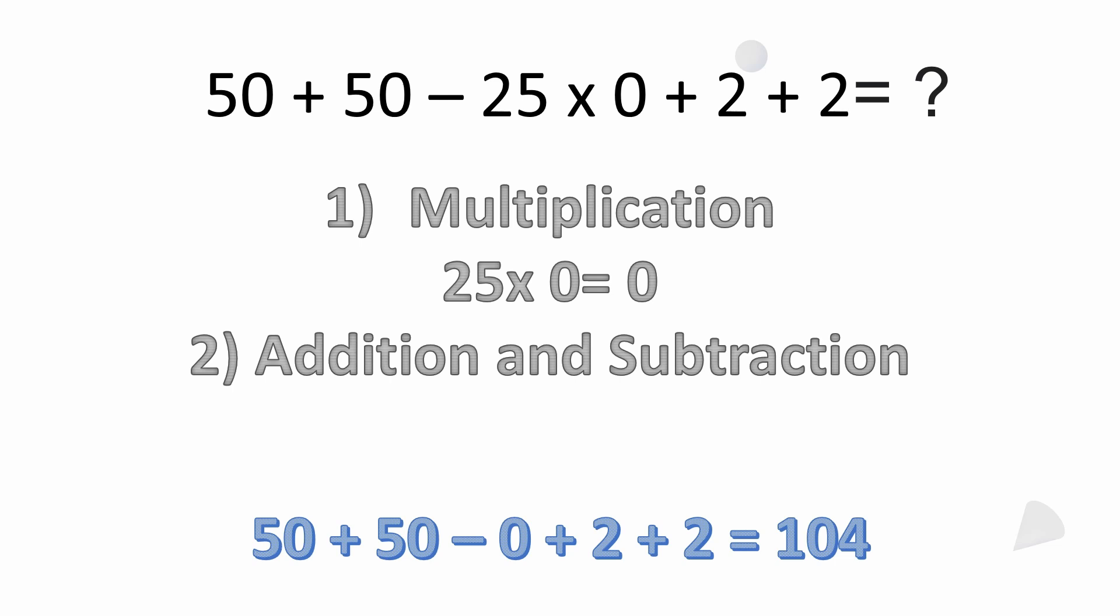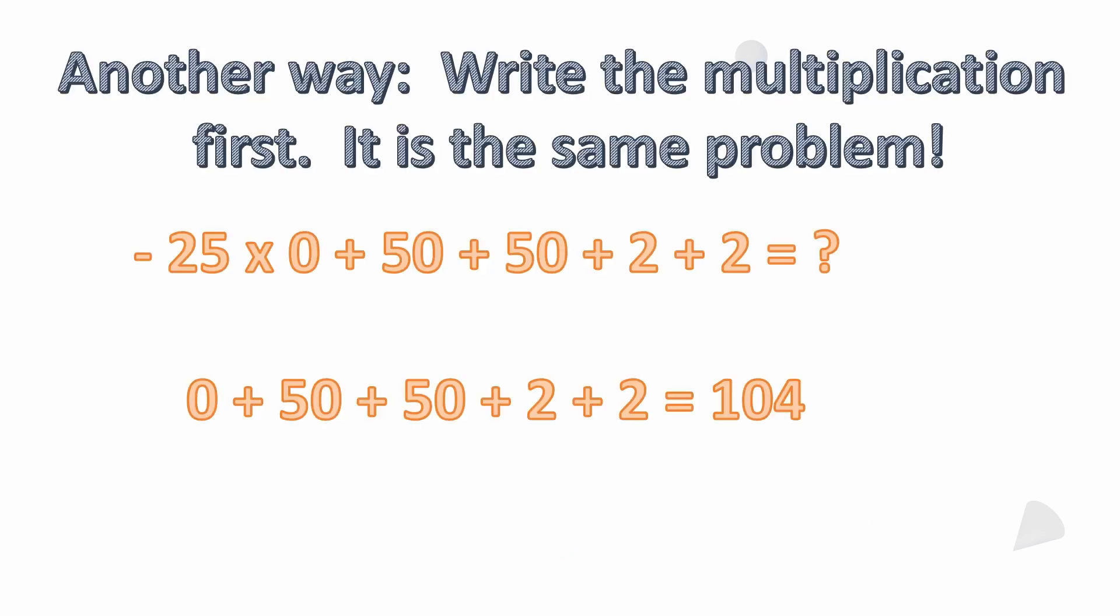We don't know what that represents, but back to the problem, you can write the multiplication first. It makes it the same problem, it doesn't change anything. So I could have minus 25 times 0 plus 50 plus 50 plus 2 plus 2.